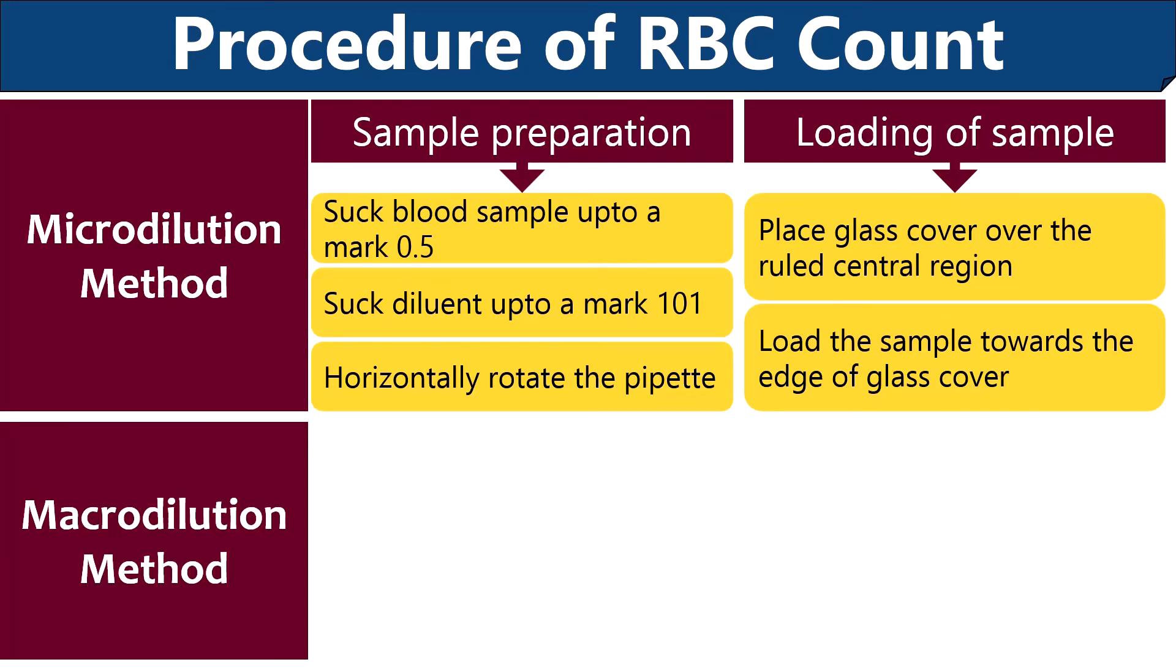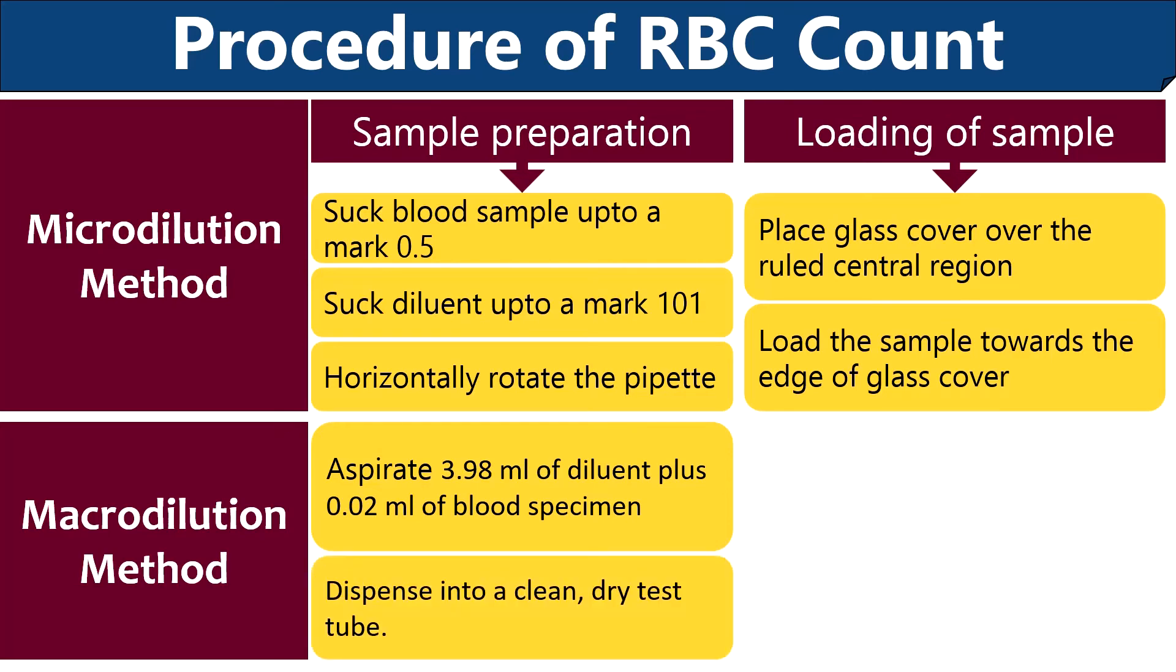Then coming into the procedure of macrodilution method, you have to perform sample preparation as in microdilution method. First, you need to aspirate 3.98 ml of RBC diluting fluid plus 0.02 ml of blood sample using a micropipette. Then dispense the sample into a clean dry test tube and thoroughly mix the contents of the sample.